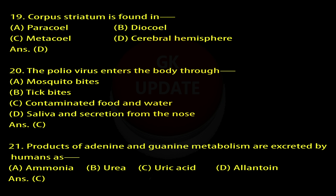Question 19: Corpus striatum is found in — A. Paracoel, B. Diacoel, C. Metacoel, D. Cerebral hemisphere. Answer: D.